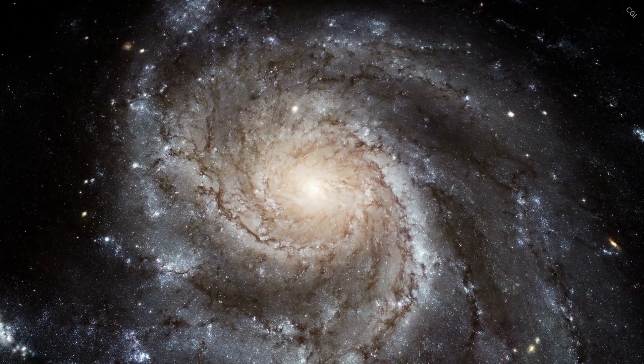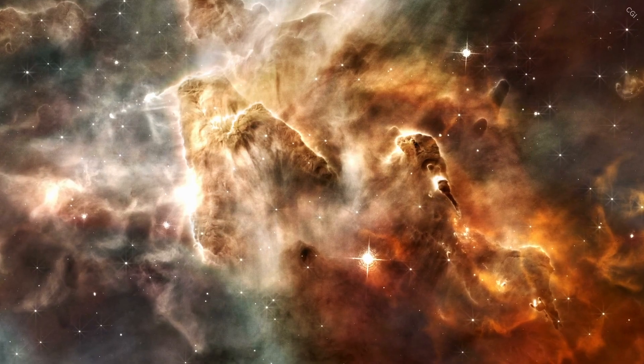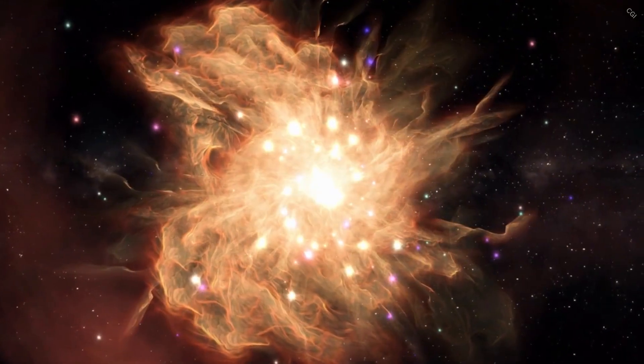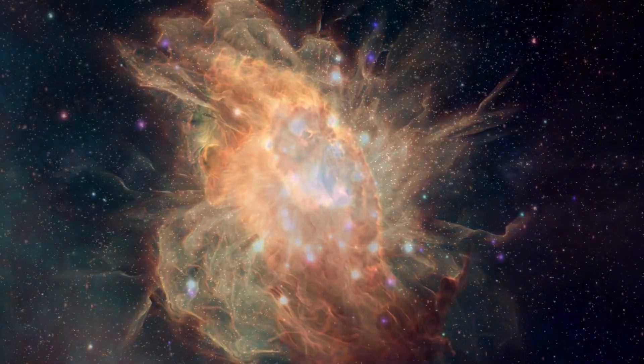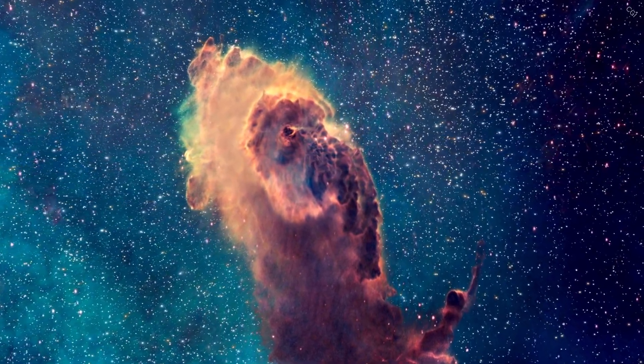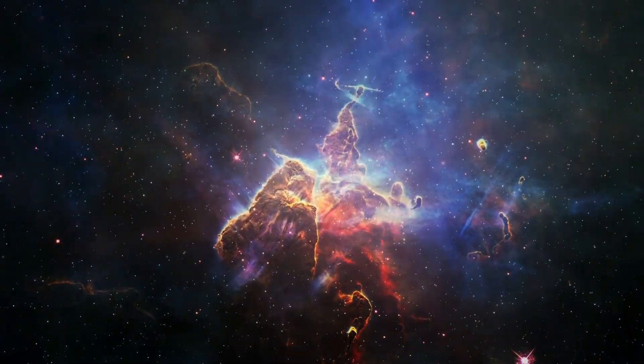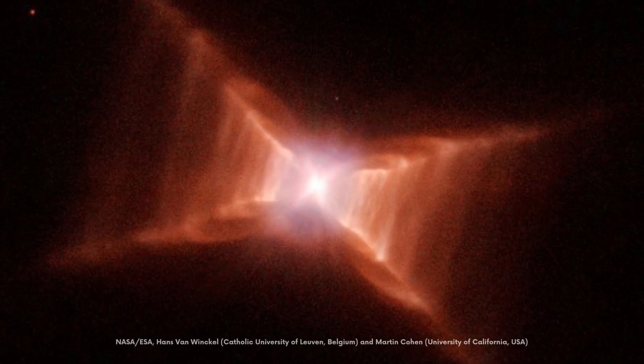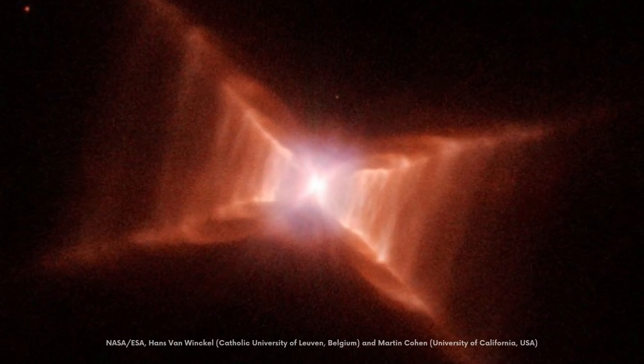Throughout the Milky Way galaxy, nebulae, which are clouds of dust and gas, take on mesmerizing shapes and forms. But there is a unique gas cloud that presents itself in an odd geometrical shape. Astronomers have named it the Red Rectangle Nebula.